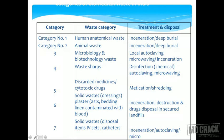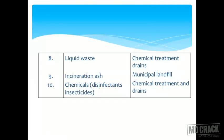Category 4 is waste sharps, treated by chemical disinfection, autoclaving, or microwaving. Category 5 is discarded medicines and cytotoxic drugs, treated by incineration and shredding. Category 6 is solid waste such as plasters, sent for incineration, destruction, and land disposal. Category 7 is solid waste, sent for incineration and autoclaving. Category 8 is liquid waste, sent for chemical treatment. Category 9 is incineration ash, disposed of in municipal landfills. Category 10 is chemicals, sent for chemical treatment and drains.